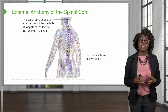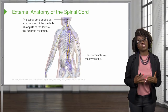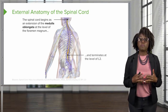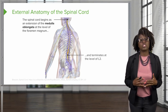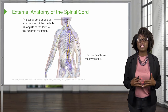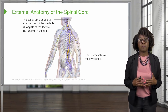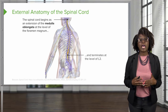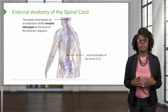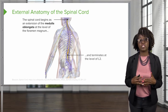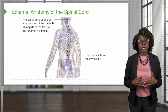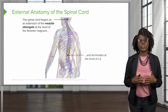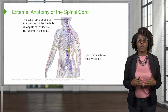Now let's discuss the external anatomy of the spinal cord. The spinal cord begins as an extension of the medulla oblongata of the brain at the level of the foramen magnum of the skull, and it terminates at the level of the L2 vertebrae.